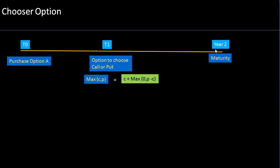Let's assume this particular option matures in two years time — that's the maturity date. So you will have a particular date before maturity where you will be given the option to choose whether you want the option to be a call or a put option. Let's assume this is a European option. You purchase the option at T0 and you do not have to decide whether it's a call or a put at entry. You come to T1, which is the date where you need to choose.